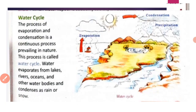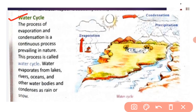Now we will discuss the water cycle. The process of evaporation and condensation is a continuous process prevailing in nature — this is called the water cycle. Water evaporates from lakes, rivers, oceans, and other water bodies, and condenses as rain or snow. Water vapor upar ki taraf jaata hai, clouds form karta hai, phir condensed hone ke baad rain ki form mein wapas earth par aata hai aur water bodies mein pahunch jaata hai. This is a continuous natural cycle.